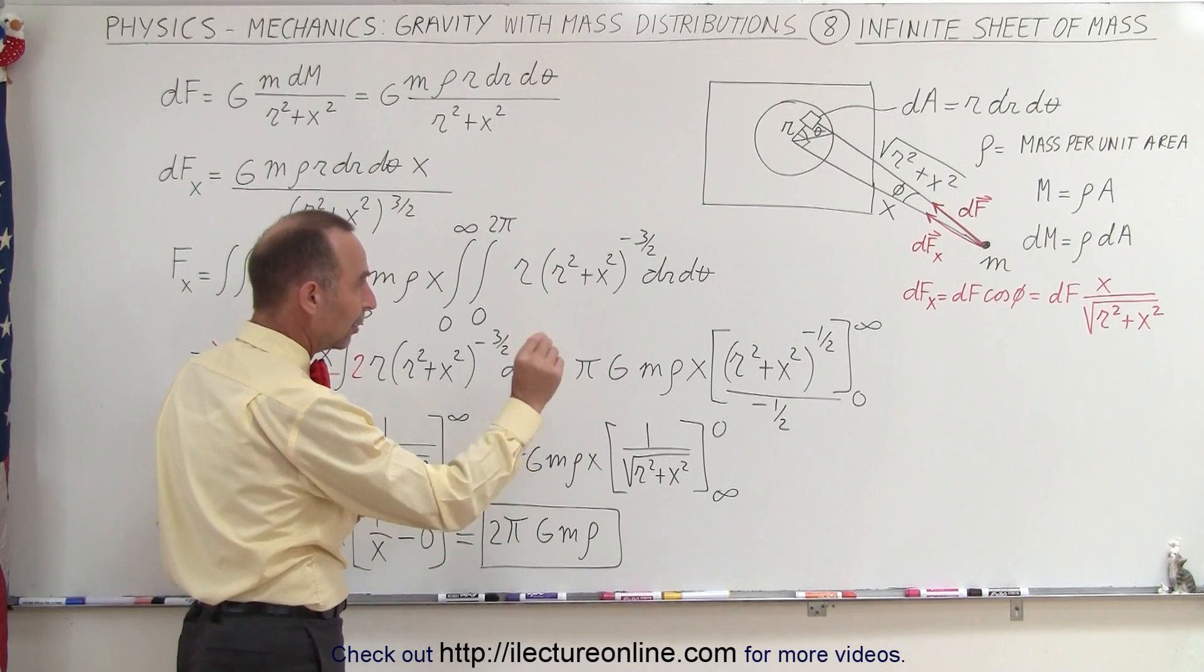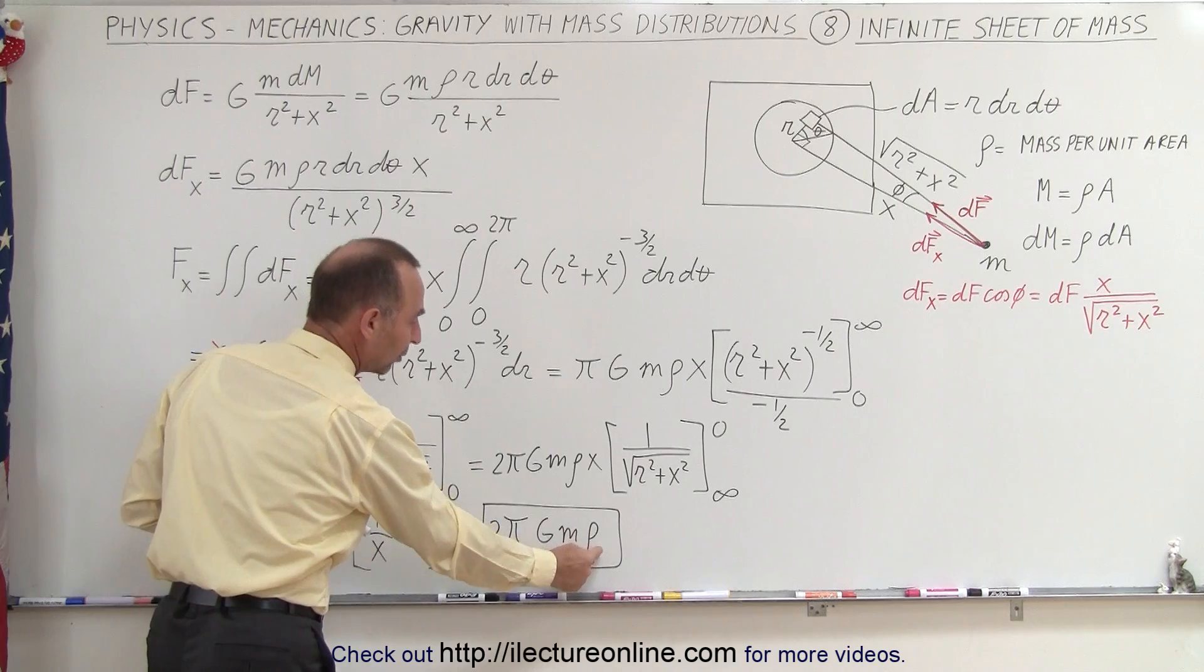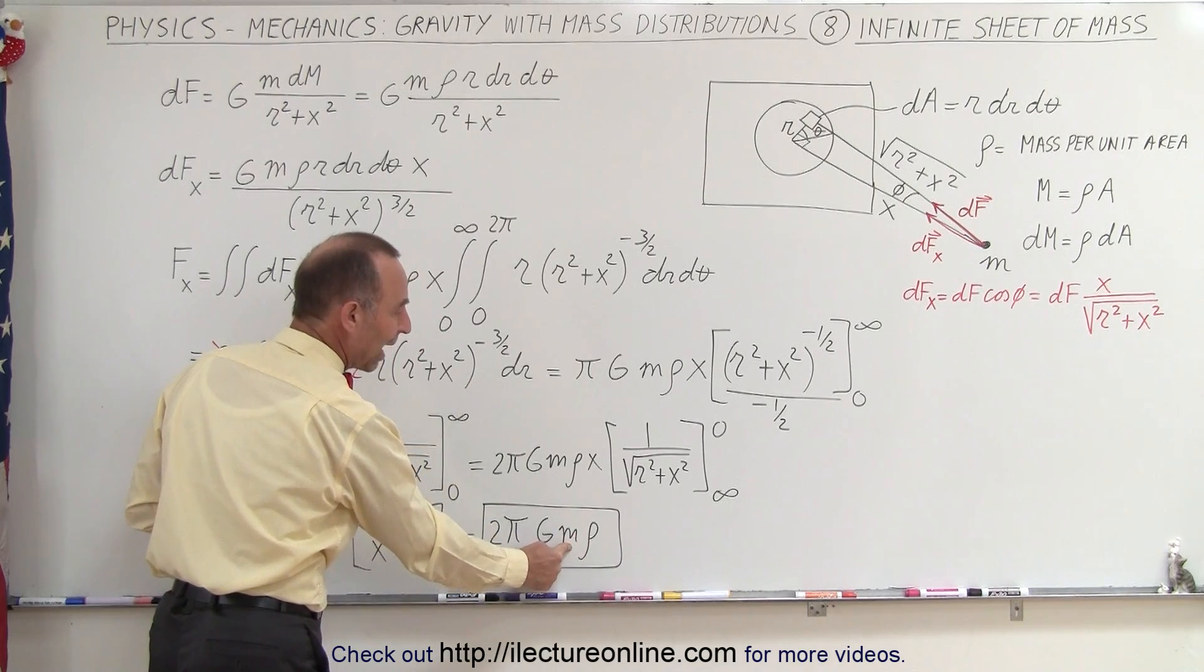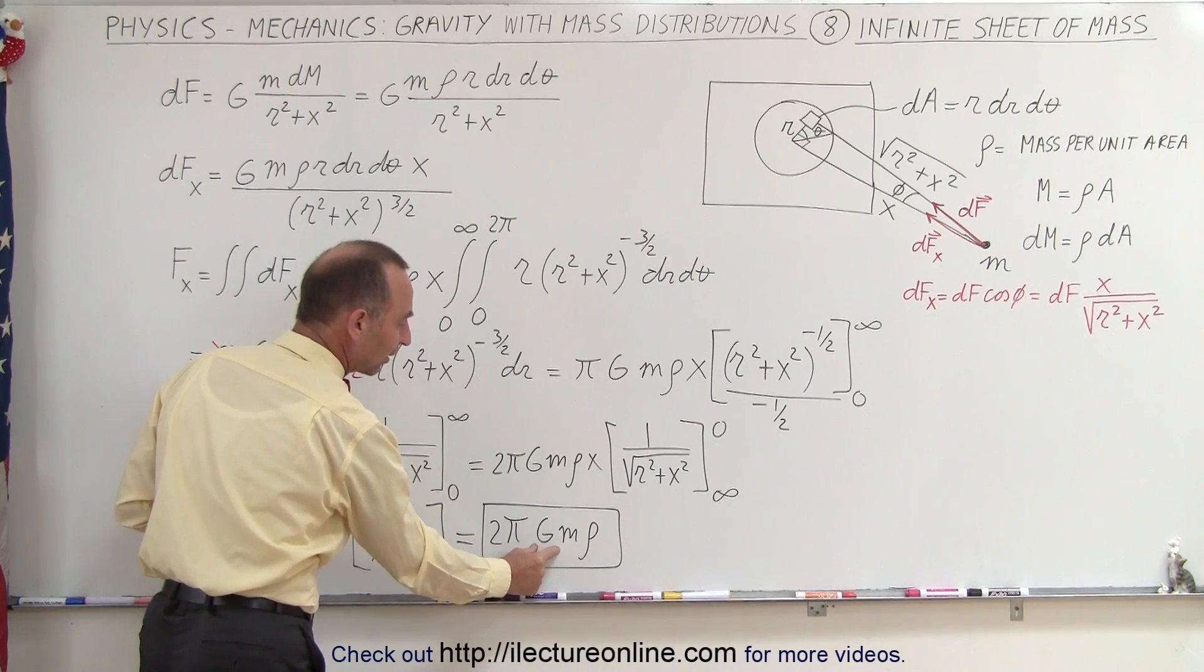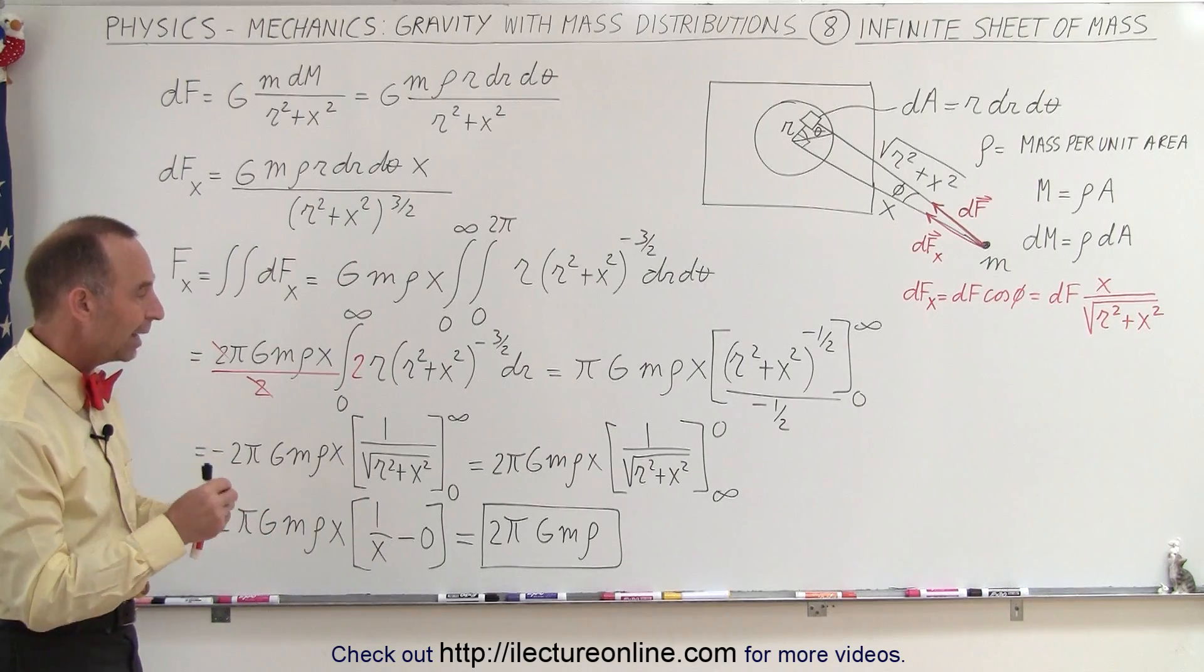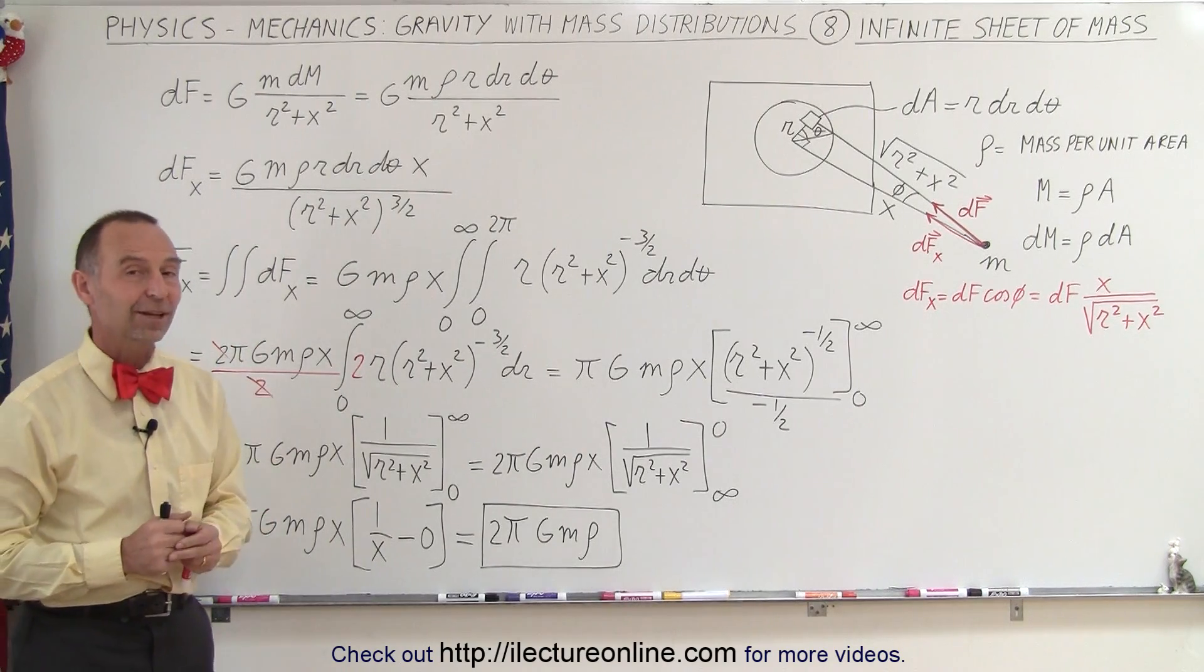The force between a small mass m and an infinite sheet will be equal to this, where this represents the density per unit area of the sheet, this represents the mass of the small mass, g is that constant, and the number 2 pi, and that will be the force between any small mass and an infinite sheet nearby. And that's how it's done.